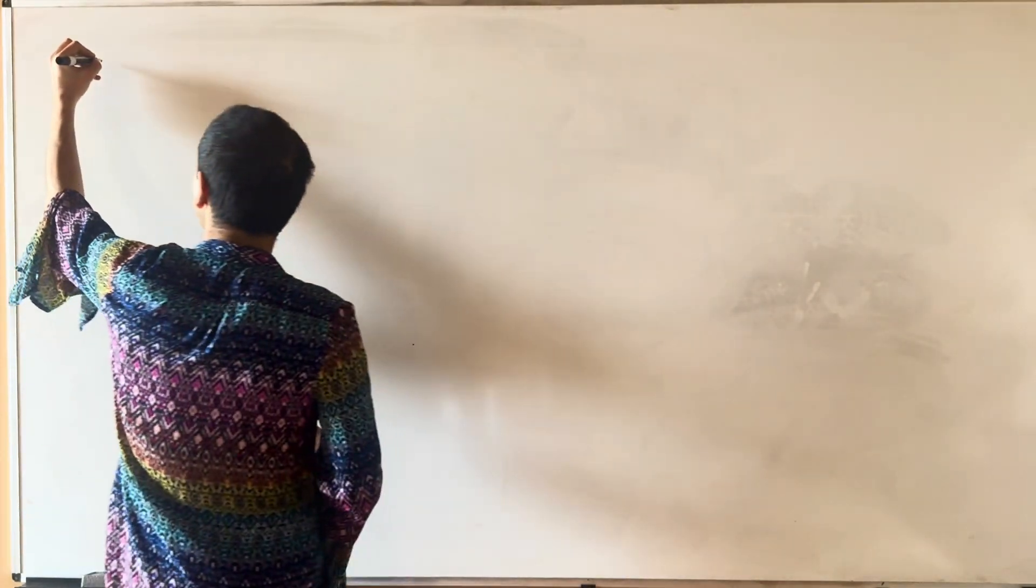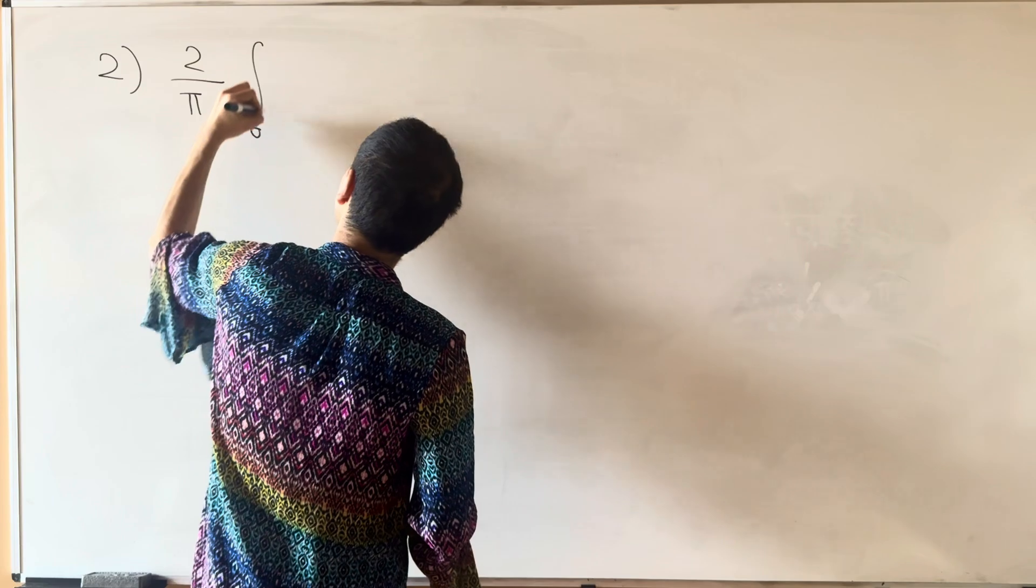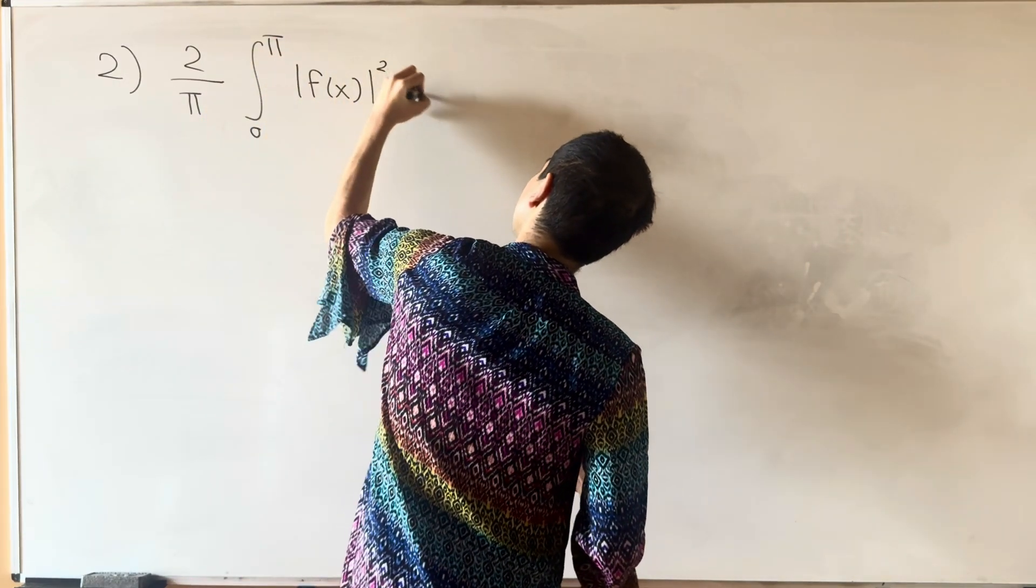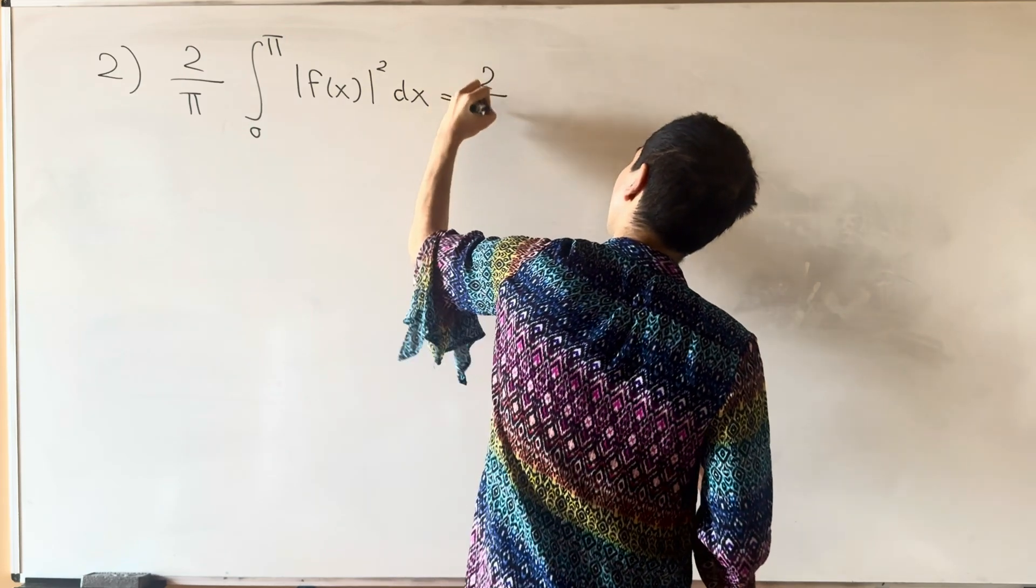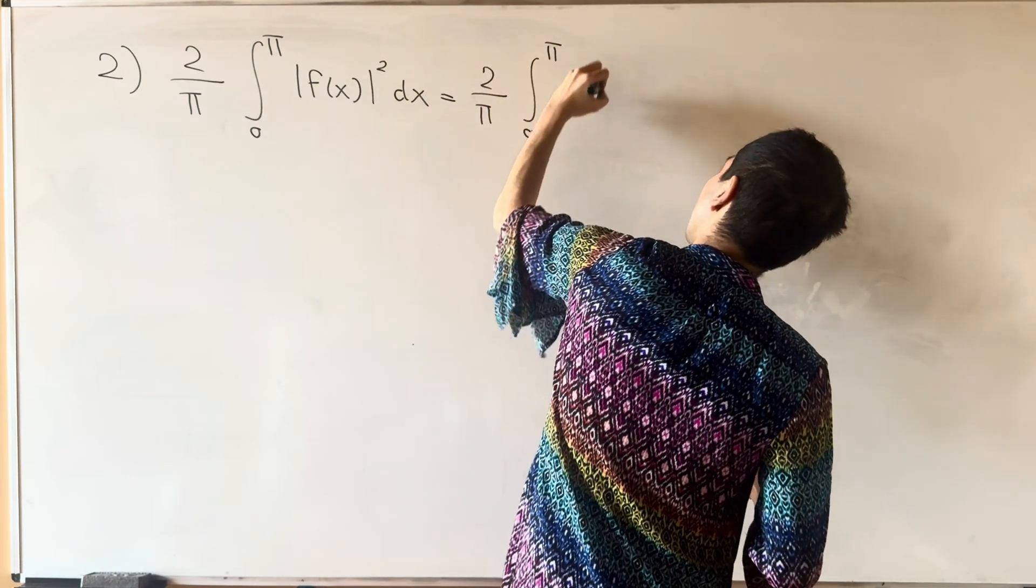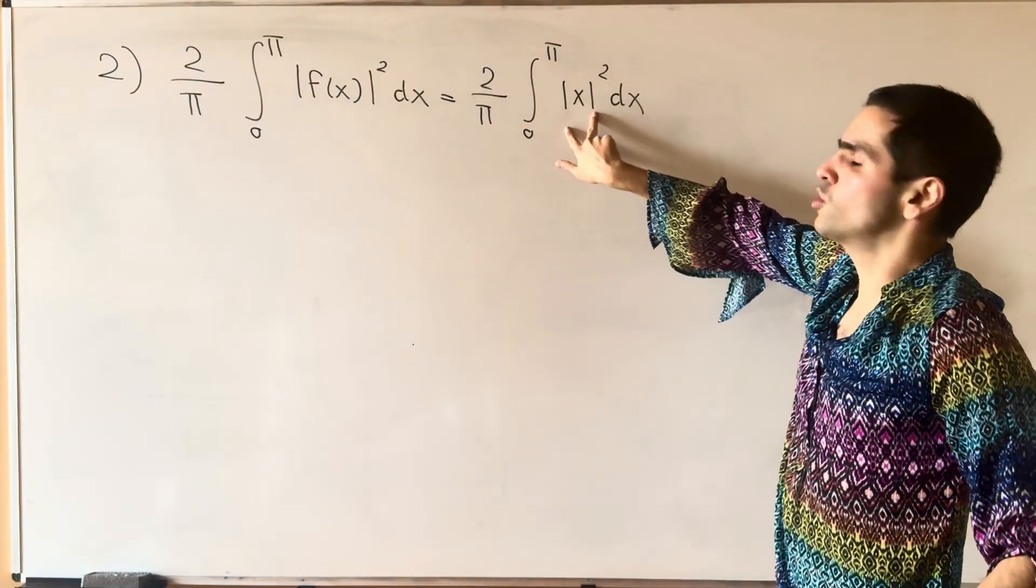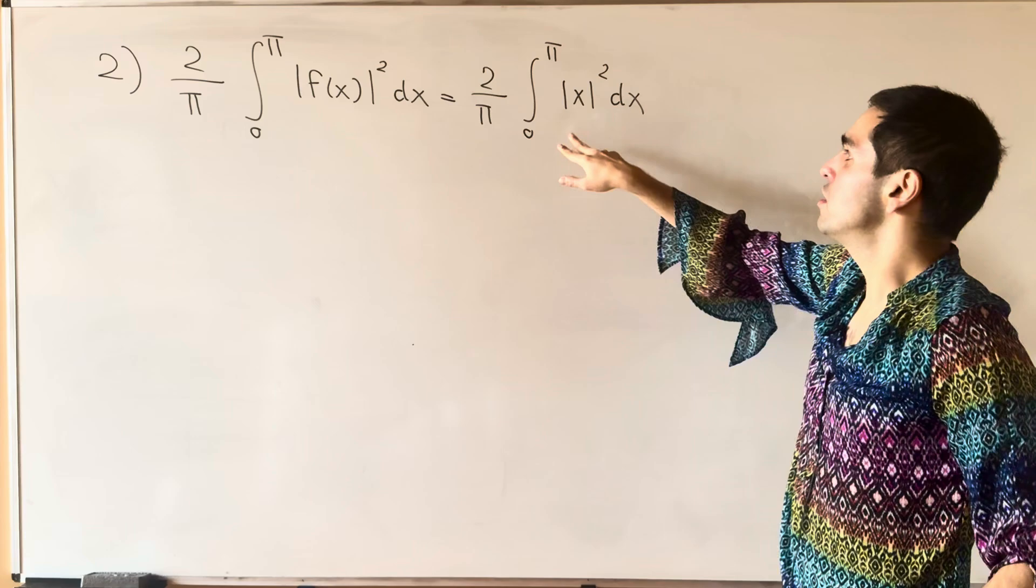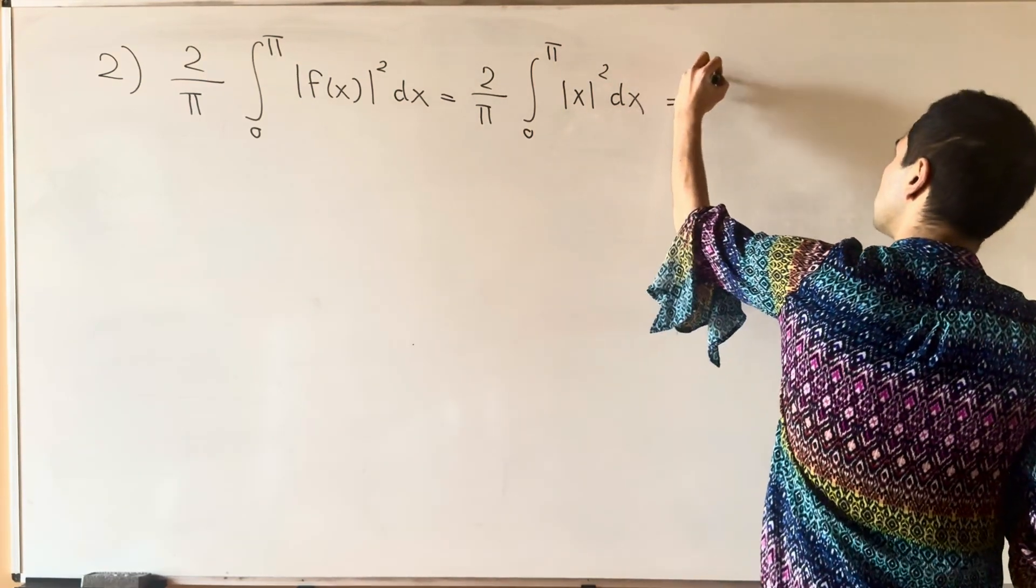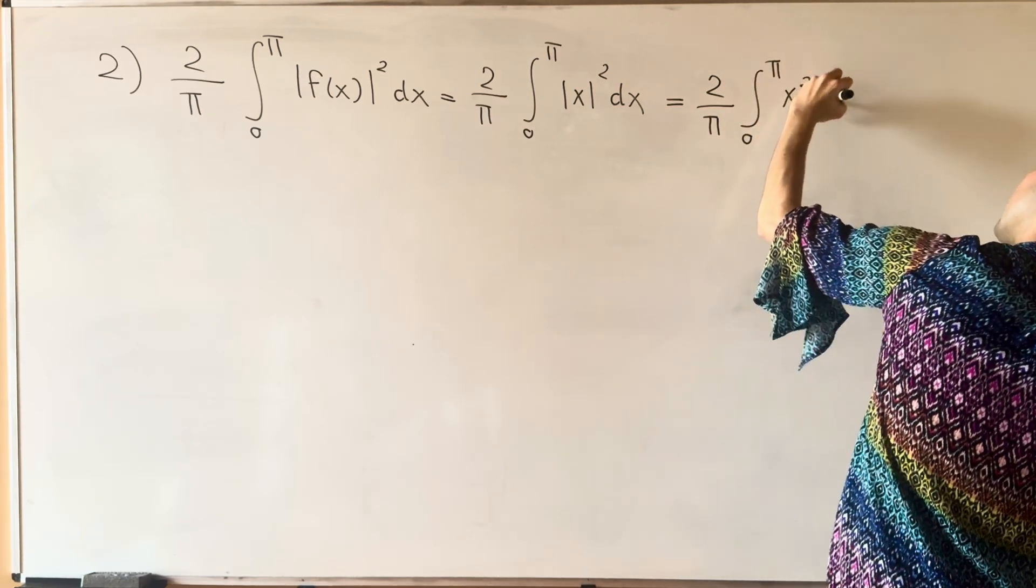So now, 2 over π, integral from 0 to π of the absolute value of x squared dx. But here, since we're taking squares and on a positive interval, this is just x squared. So that's 2 over π, integral from 0 to π, x squared dx.